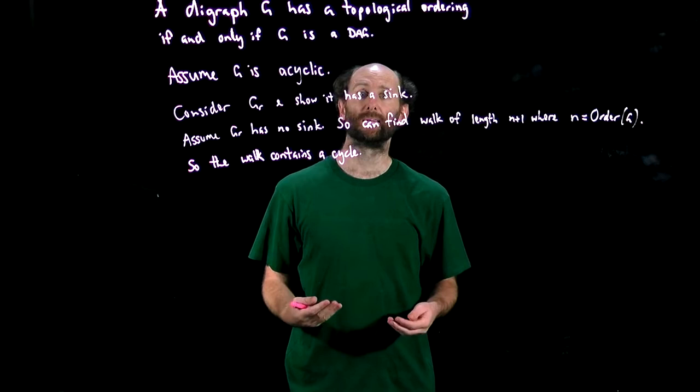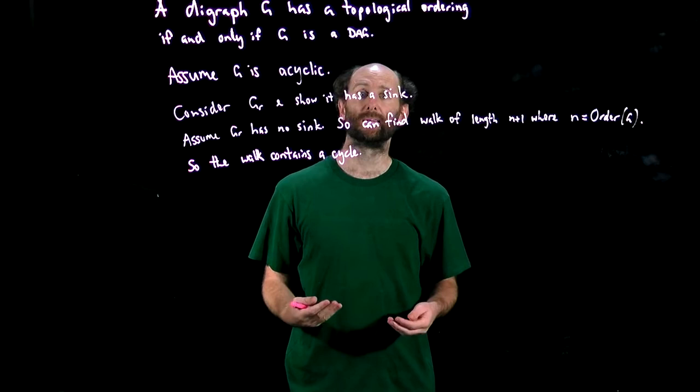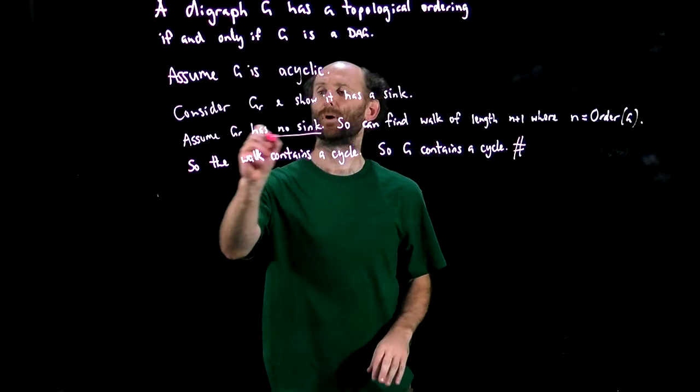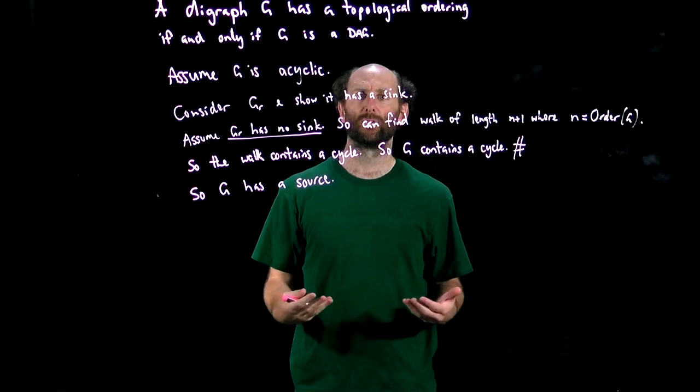That is, the reverse of G contains a cycle so G contains a cycle. That's a contradiction, so that means that our assumption that G_r has no sink must be incorrect. Hence the reverse digraph has a sink and the original digraph G has a source.